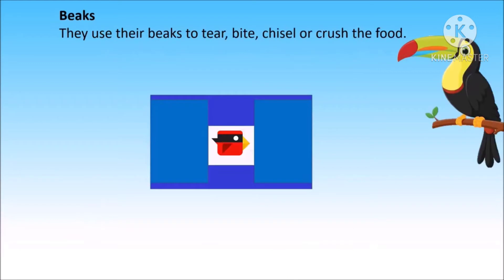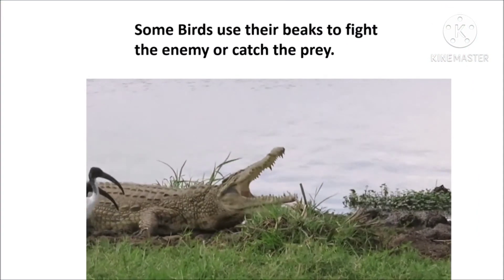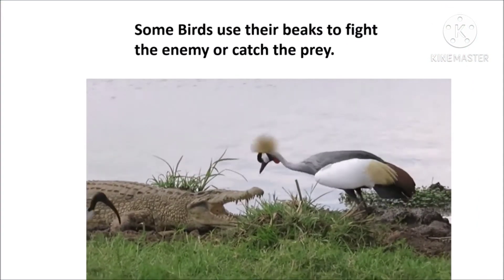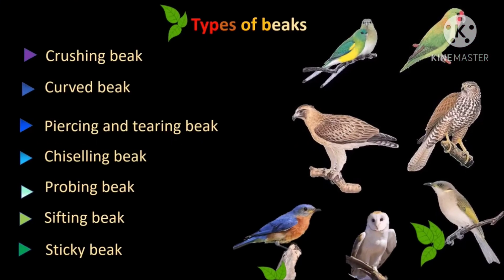Now let's learn about beaks and claws of birds. Birds don't have their own teeth. They use their beaks to bite, tear, chisel or crush the food. The shape of the beak is according to the food habit of the bird. Birds also use their beaks to fight with enemies or catch prey.